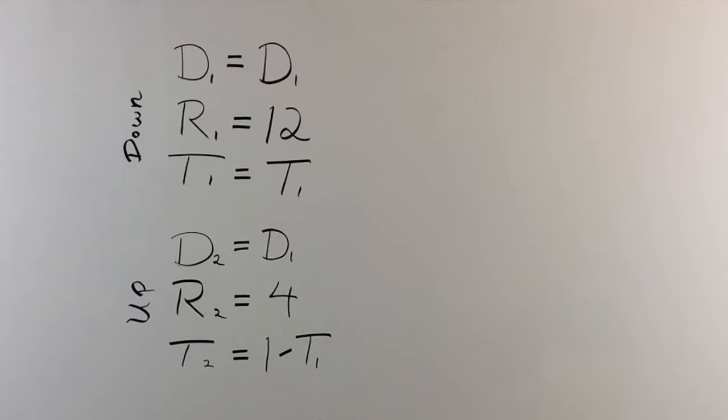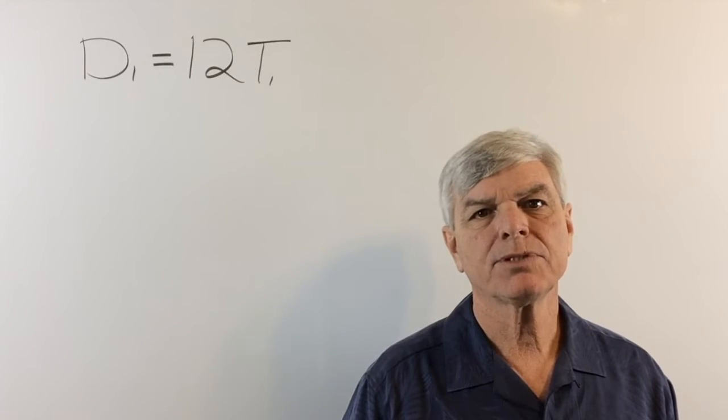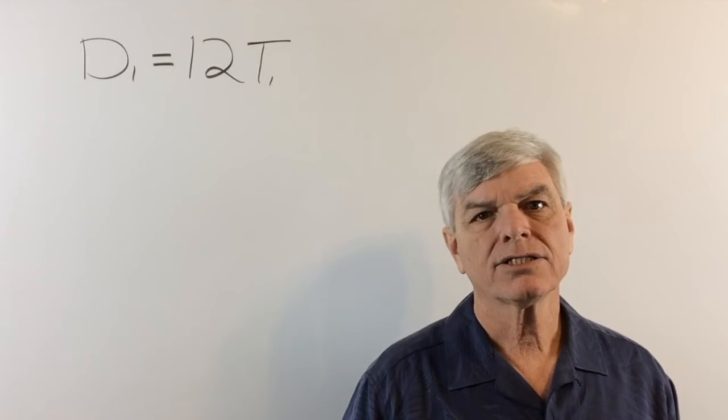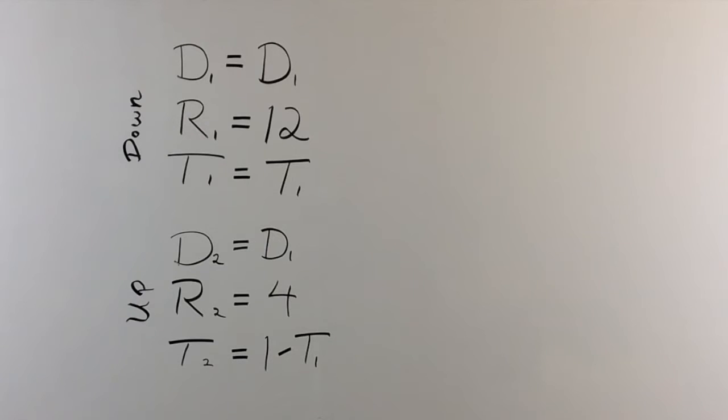So for our first formula I think you can see that is going to be D1 equals 12 times T1. There you go. That is pretty simple. And our second formula is going to be D1 equals 4 times parentheses 1 minus T1. Do you see that? Do you see that? Look in the grid. Remember it is going to be D2 equals R2 times T2.